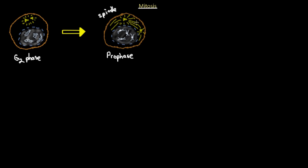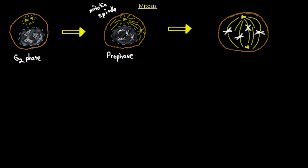The structures that radiate from the centrosomes are microtubules, which assist in the process of cell division and mitosis. What we have here is the formation of a mitotic spindle. This mitotic spindle is formed by the two centrosomes migrating to opposite sides of the cell, connected through a bundle of microtubules.